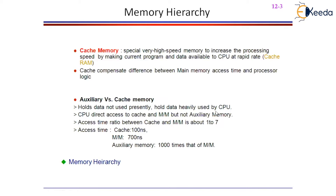Cache memory holds the data heavily used by the CPU — that is a property of cache memory. CPU has direct access to cache and main memory, but not to the auxiliary memory. CPU will have direct access to cache memory and main memory because there is an access ratio — that is 1 to 7 to 7 lakhs these days.